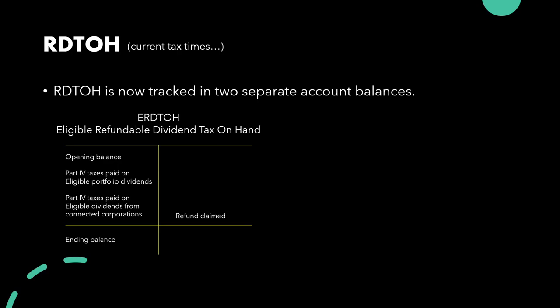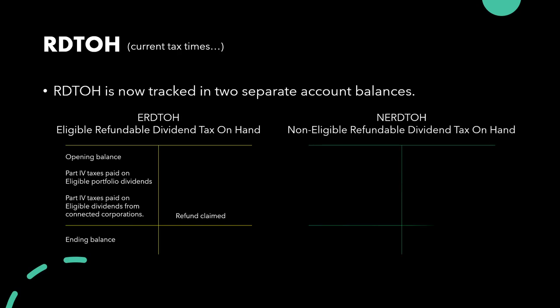The other RDTOH account is called the Non-Eligible Refundable Dividend Tax on Hand account, or NERDTOH. We have an opening balance, to which we add the Part 1 refundable tax for the year, and any Part 4 taxes paid on non-eligible dividends from Connected Corporations, to the extent that such dividends included a refund from the paying corporation's non-eligible RDTOH account. In some rare instances, Part 4 taxes paid on non-eligible dividends from non-connected, taxable Canadian corporations — but that would be rare and is out of scope for this course.